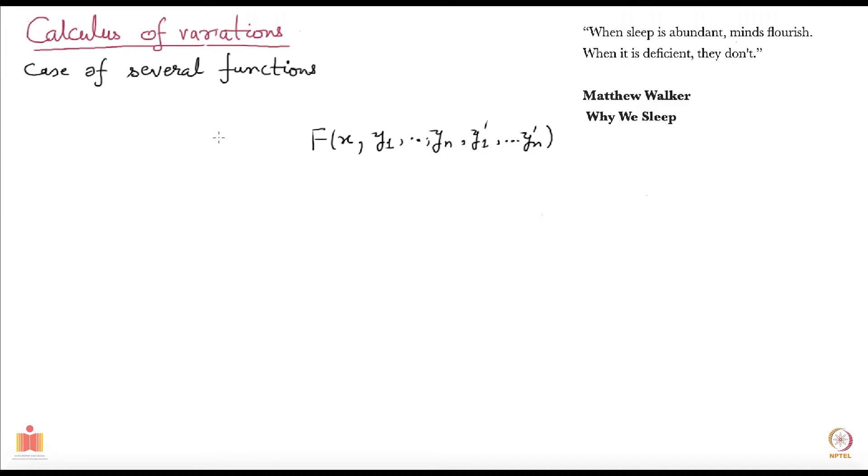It is a generalization of the case which we looked at last time where we had only one function y which was unknown and we still have our integration. This is the integral we are looking at and we want to extremize this. Let us call it y1 up to yn. That is the functional j we have and I have put square brackets to emphasize that this is a functional.